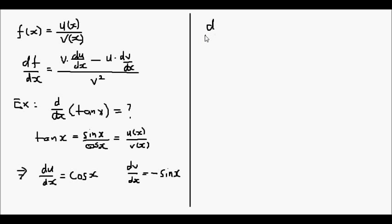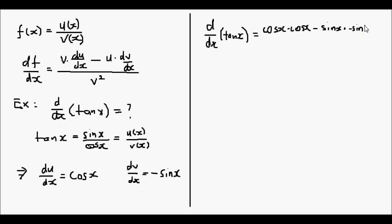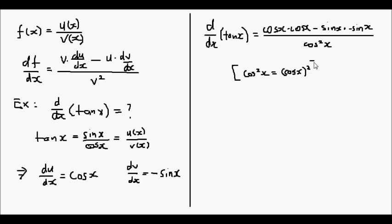So following the quotient rule, the derivative of tan(x), d/dx of tan(x), would equal: cos(x) — keeping the bottom part the same — multiplied by cos(x), the derivative of the top part, minus sin(x) — keeping the top part the same — multiplied by negative sin(x), the derivative of the bottom part, all over cos squared(x).